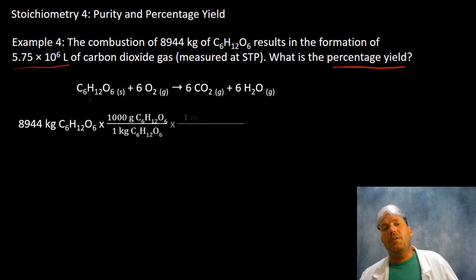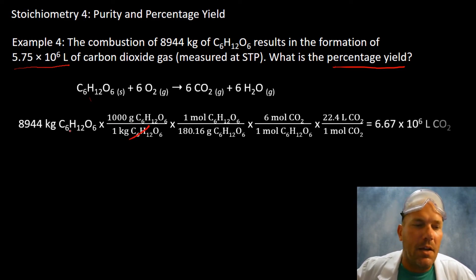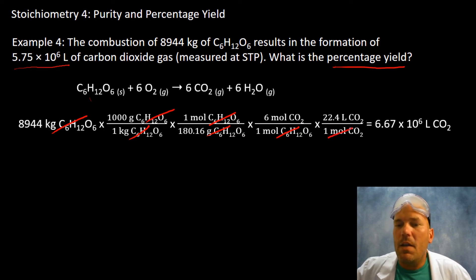If you go through and you multiply all this good stuff out and you convert your kilograms to grams and you find your molar masses, which are in grams, which is the purpose of the conversion as you know, and you use the correct mole ratio of six to one, and you convert at STP to 22.4 liters of carbon dioxide or any other gas for that matter, and you multiply everything on the top and you divide that quantity by everything on the bottom, you are going to get 6.67 times 10^6 liters of carbon dioxide.